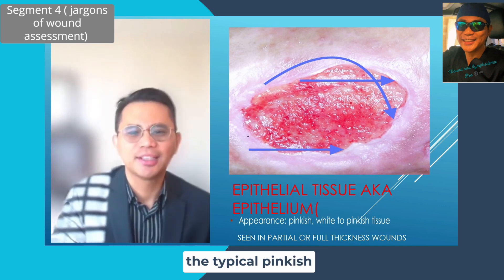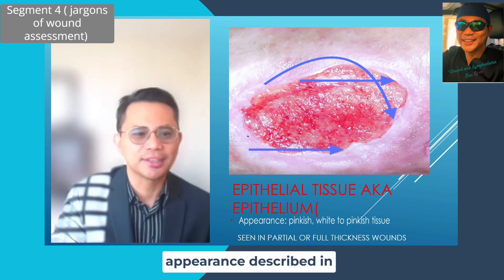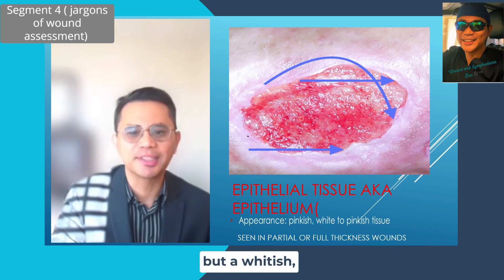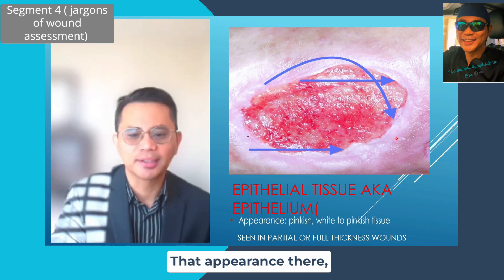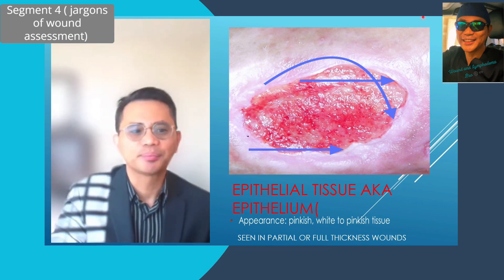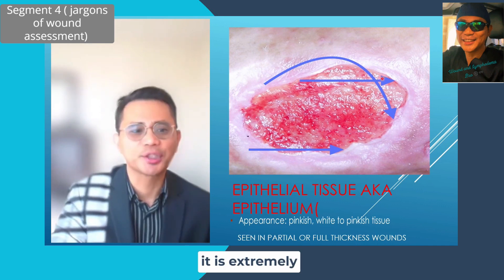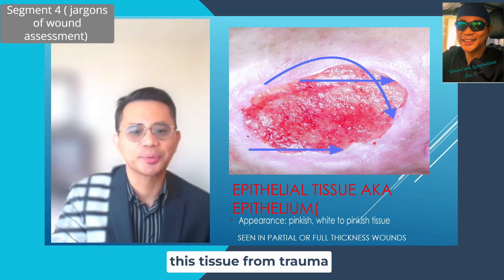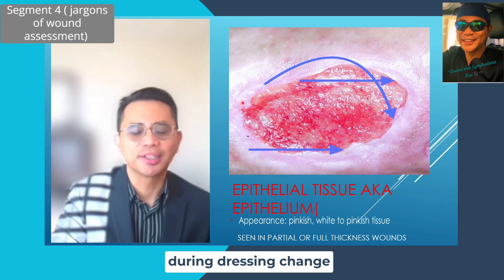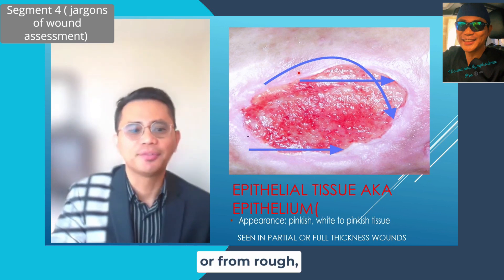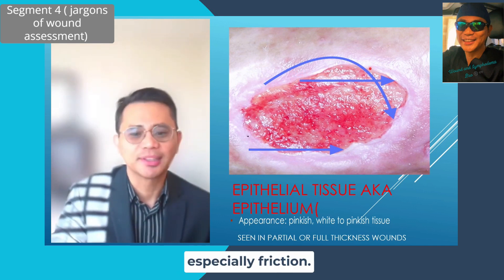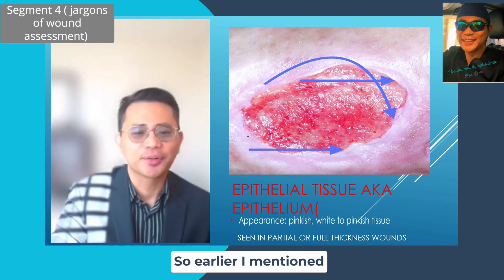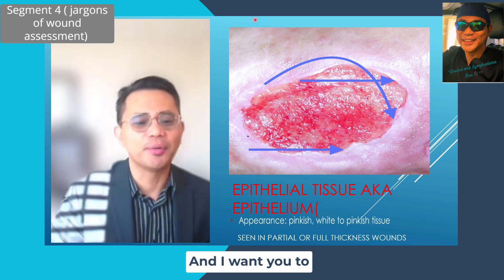The typical pinkish appearance described in literature or textbooks may not be seen; rather, a whitish-pink appearance is what we observe with the naked eye. It is extremely important to protect this tissue from trauma during dressing changes, from rough wound cleansing, and from other forms of external trauma, especially friction.